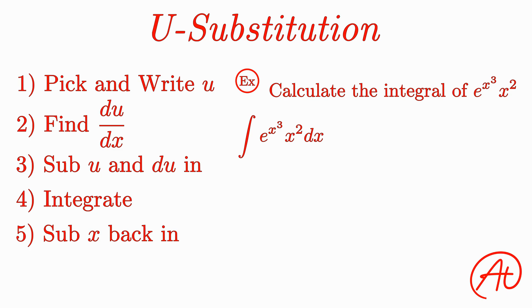So, first step is to pick what our u is. And remember, we want to pick our u in such a way that its derivative cancels with something in our function. For example, if we picked x squared to be our u, the derivative would be 2x, but that doesn't exactly cancel with anything.